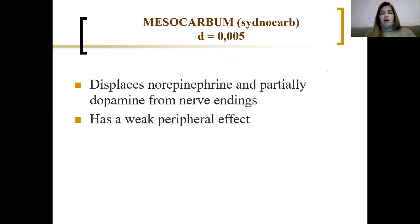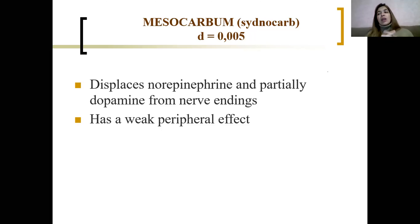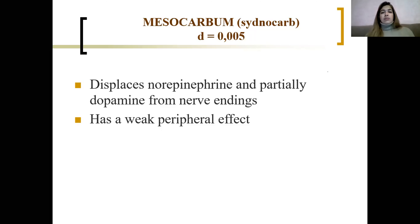Mesocarb, or sybnocarb, is also one drug from this group but it is less active. It displaces norepinephrine and partially dopamine from nerve endings and has a weaker peripheral effect, so the effect will be less pronounced than with amphetamine. But it will be quite a good stimulating drug. It is not prescribed for normal people.